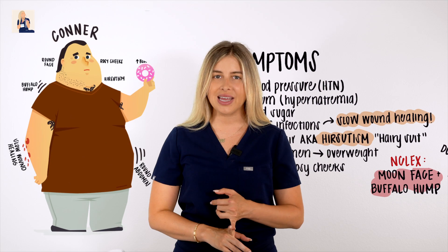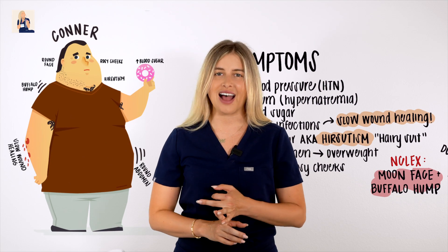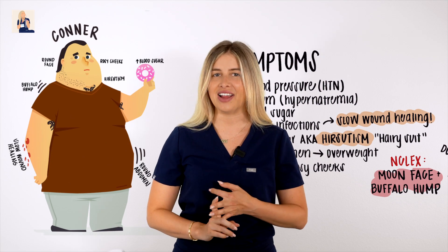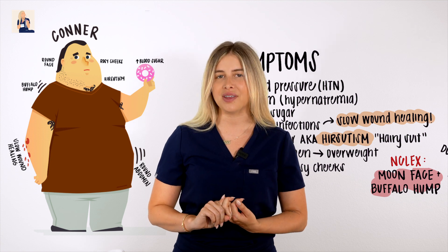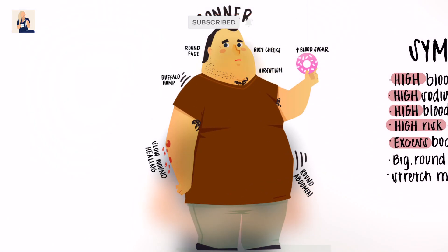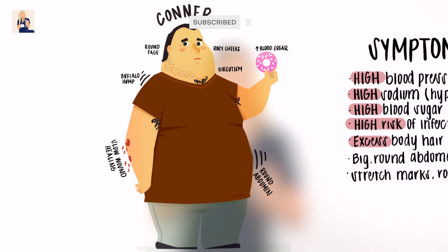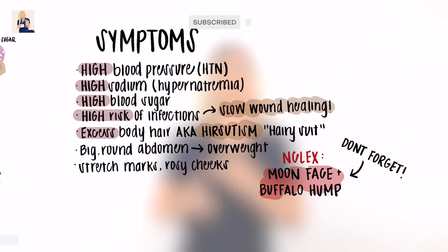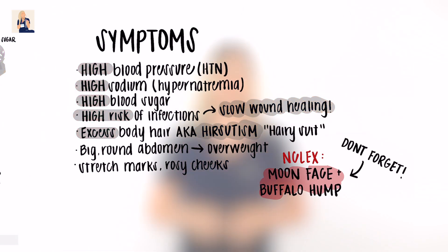He is big, he is round, he's hairy, and he has high lab values. Two big characteristics of Cushing syndrome for the NCLEX: moon face and buffalo hump. Do not forget these.